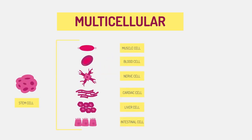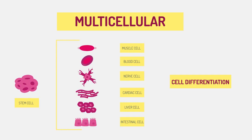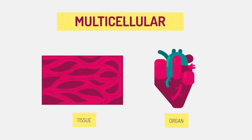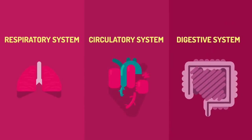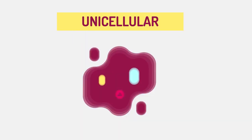Being multicellular allows the organisms to be larger and have cell differentiation — so different types of cells to carry out different tasks. Groups of cells then function in the same way to form tissues or organs. These specialized organs carry out our life processes, working together in systems.